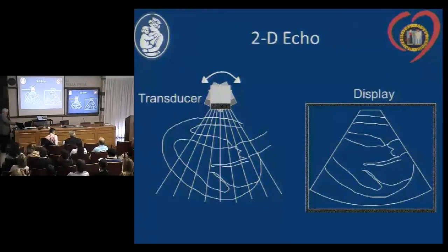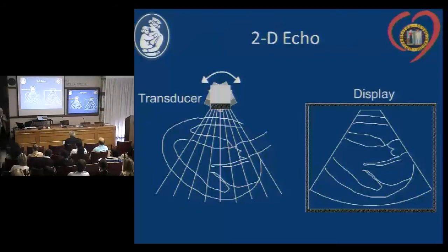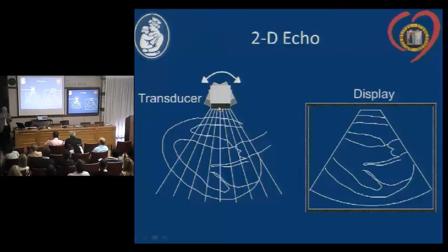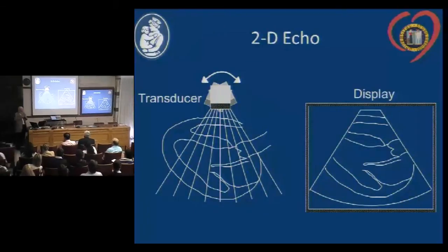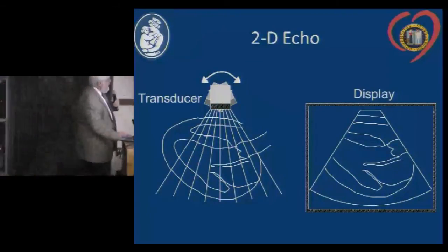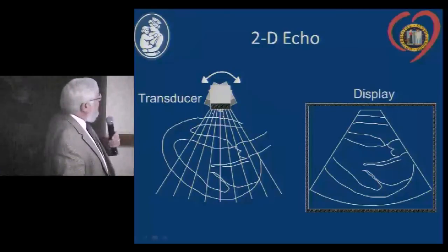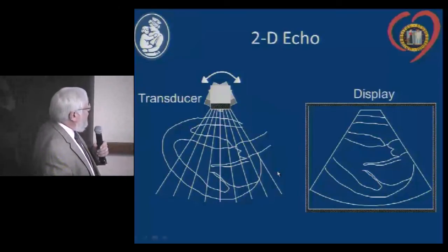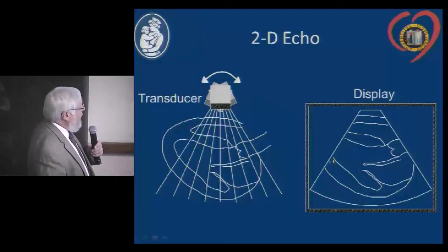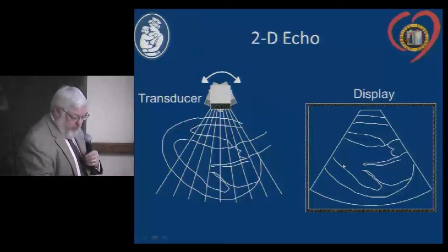We're going to talk about generation of two-dimensional images. Originally, as Dr. Silverman explained, this was accomplished by rotating a single transducer element back and forth, recording multiple scan lines as the transducer was swept to create a two-dimensional image. This took us from an M-mode image as a single scan line to multiple scan lines creating a coherent two-dimensional image.